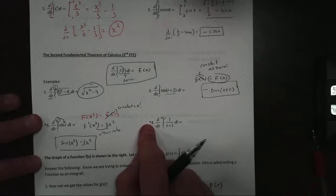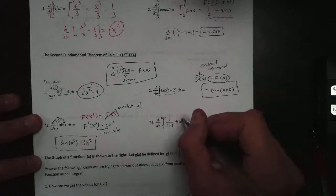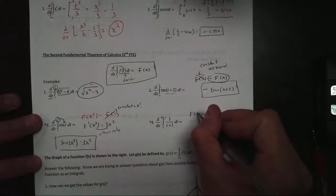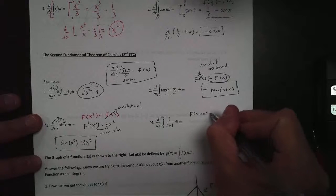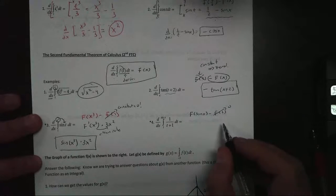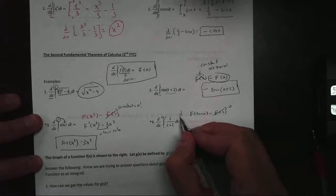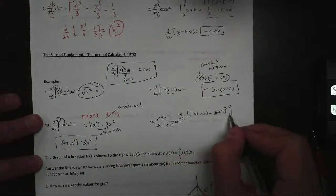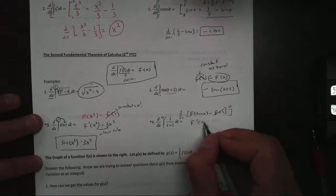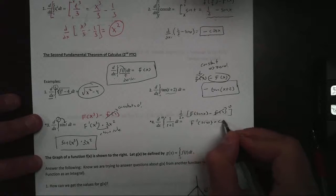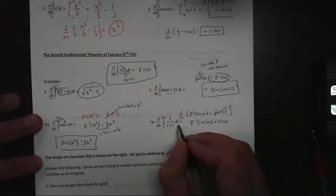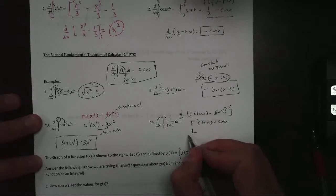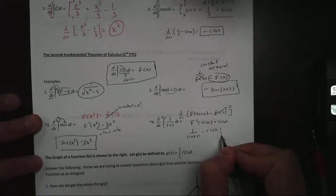For number 4, same thing. This is going to become f of sine of x minus f of 1. Again, that's just 0 when I take the derivative. So this is going to become f prime of sine of x times the derivative of the inside, which is cosine of x. I just plug it in: 1 over sine of x plus 1, times cosine of x. And there's my answer.